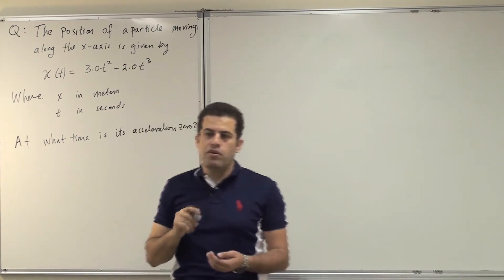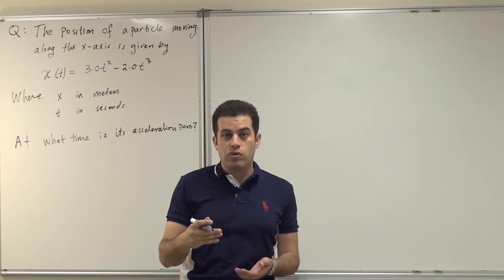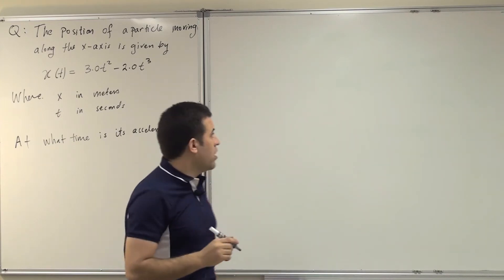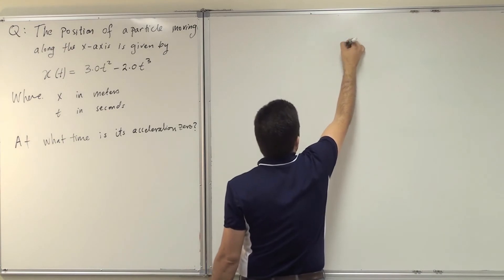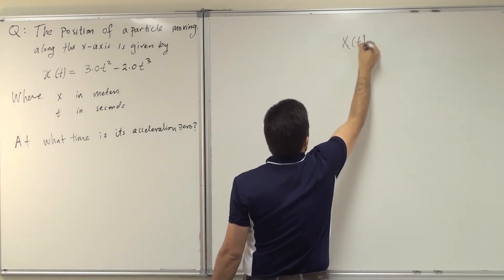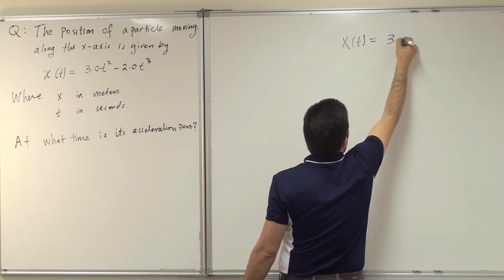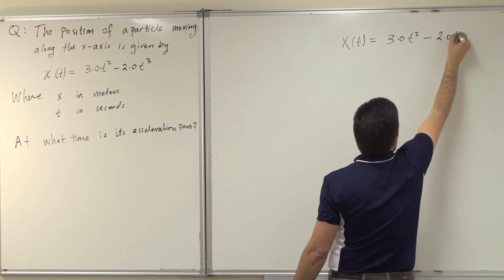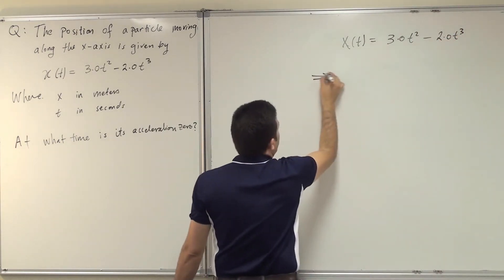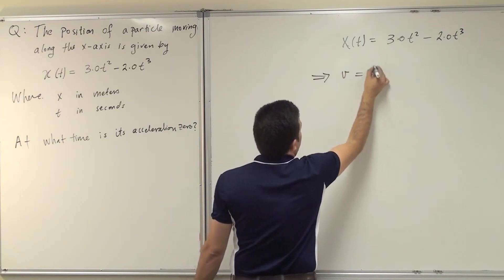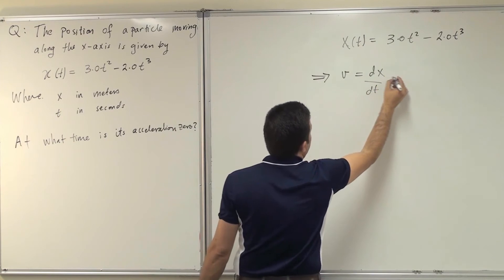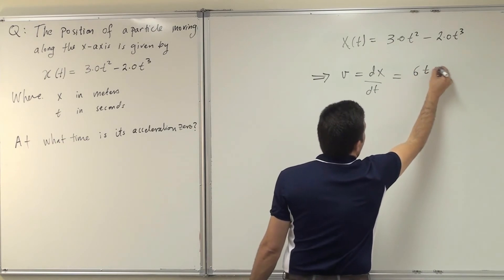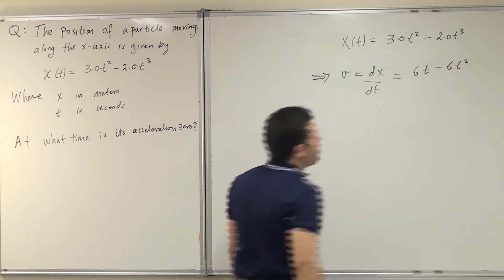The question asks for the time when the acceleration equals zero. I need to find the acceleration, equate it to zero, and then extract the time. Starting with the position equation x of t equals 3t squared minus 2t cubed, to get the velocity, velocity equals dx by dt, the first derivative, which gives 6t minus 6t squared.